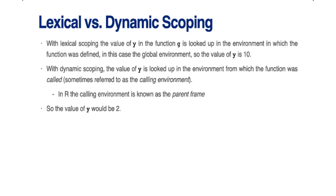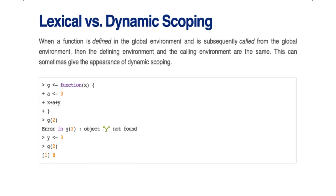With dynamic scoping, the value of y is looked up in the environment from which the function was called, sometimes called the calling environment. In R, the calling environment is known as the parent frame. In this case, the calling environment has y defined as 2, so the value of y would be 2. Calling f of three produces different answers depending on whether you use lexical or dynamic scoping. When a function is defined in the global environment and called from the global environment, the defining and calling environments are the same, which can give the appearance of dynamic scoping even when it doesn't exist.